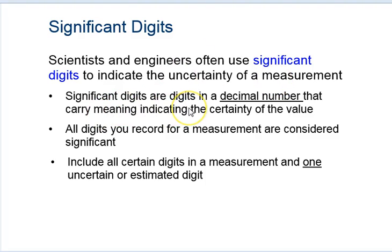So significant digits are digits in a decimal number that carry meaning. All digits you record are considered significant. Include all the certain digits in a measurement and one uncertain or estimated digit. This is the key here.